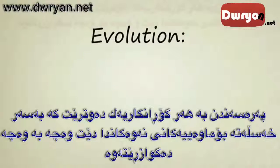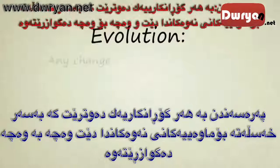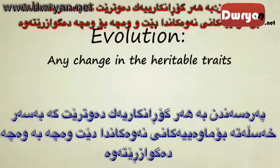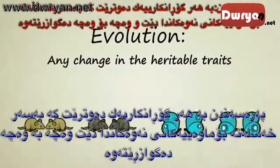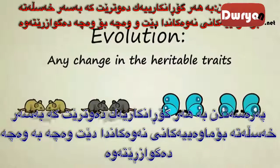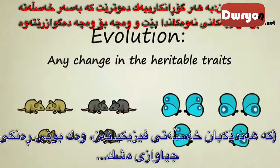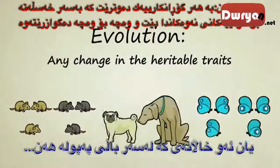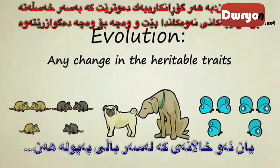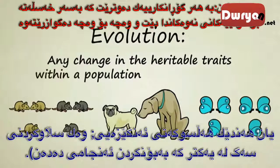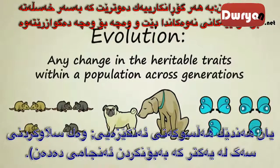In biology, evolution can be defined as any change in the heritable traits — those are physical traits like fur color in mice, spots on the wings of butterflies, or instinctive behaviors like the way that dogs greet their friends with a sniff — within a population across generations.